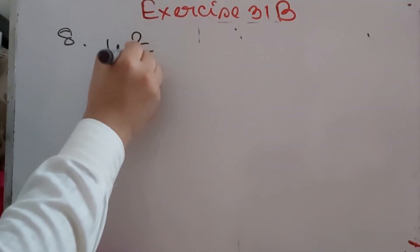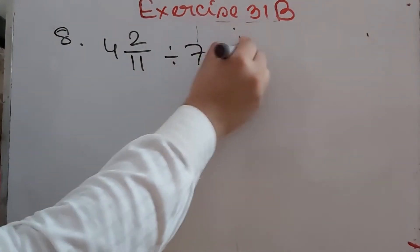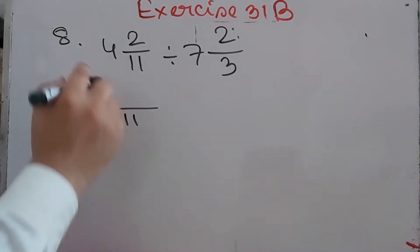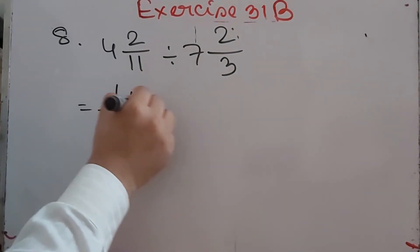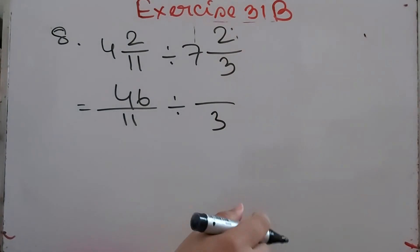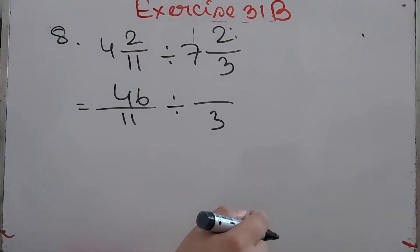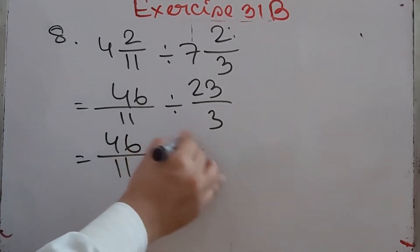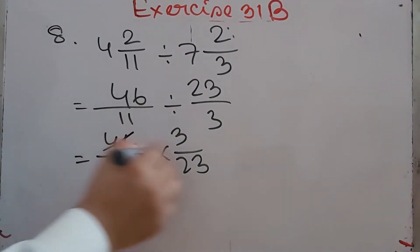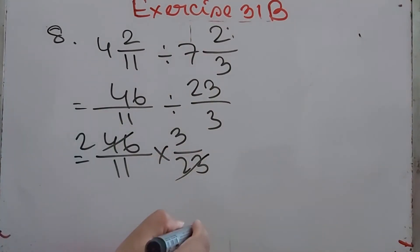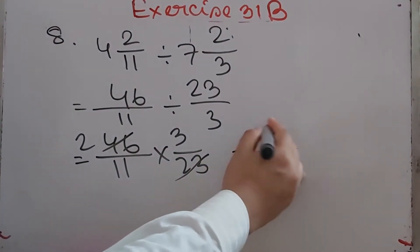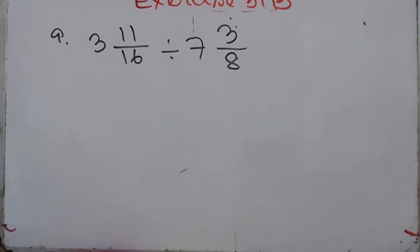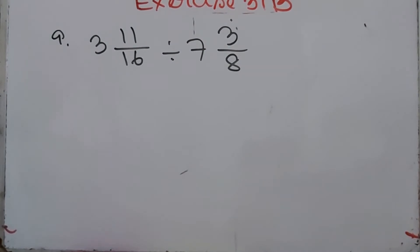Number 8: 4 whole 2/11 divided by 7 whole 2/3. Convert: 11×4 = 44 plus 2 = 46/11, and 3×7 = 21 plus 2 = 23/3. Multiply 46/11 by 3/23. Dividing 46 by 23 gives 2, so 2×3 = 6/11. The answer is 6/11.